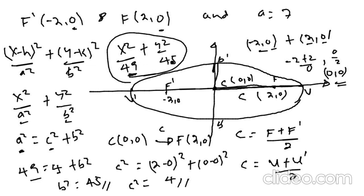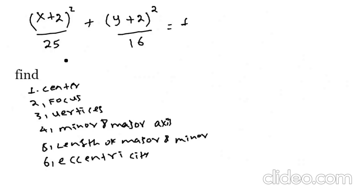A is greater than B. The denominator is greater than B. The denominator is equal to the A value. This example is a vertical ellipse. Let's take an example: x plus 2 squared divided by 25, plus y plus 2 squared divided by 16, equals 1. We need to find the center, focus, vertices, minor and major axis, length of major and minor axis, and eccentricity formula.